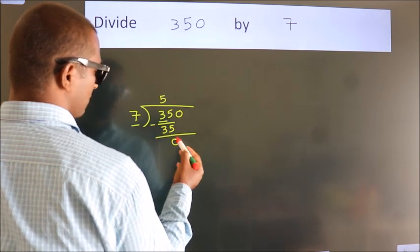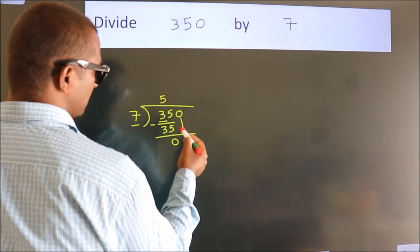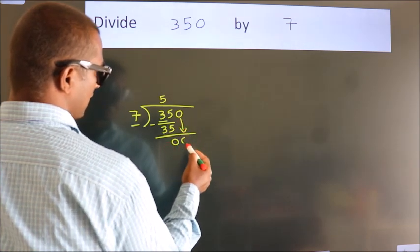Now we should subtract. We get 0. After this, bring down the next number. So 0 down.